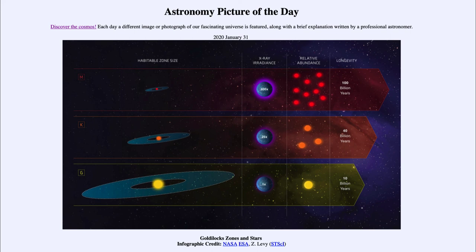So, that was our picture of the day for January the 31st of 2020. It was titled Goldilocks Zones and Stars. We'll be back again tomorrow for the next picture, previewed to be Apollo 14 Earthrise. So, we'll see what that is about tomorrow.